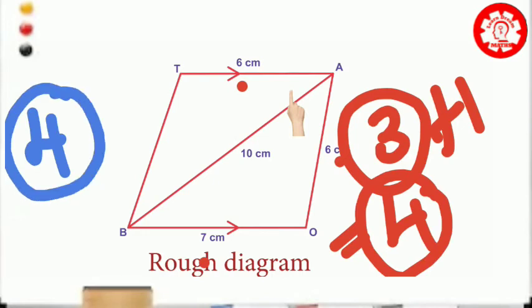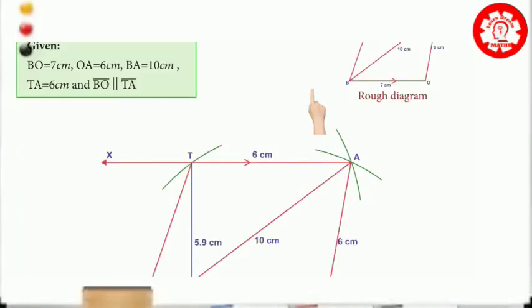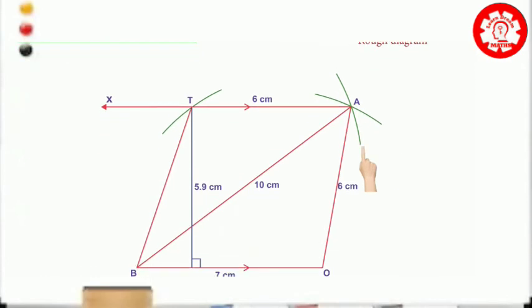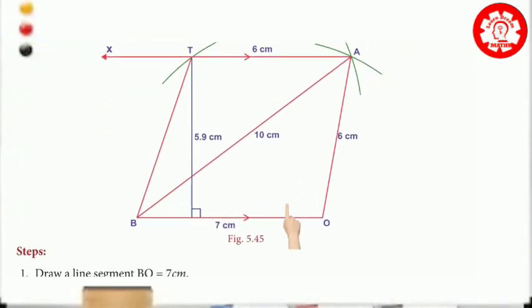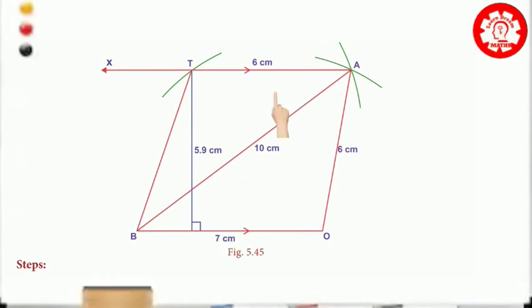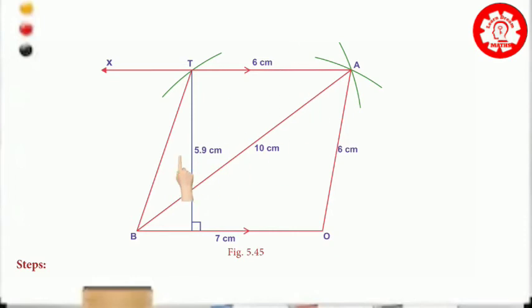So now we have the main figure. Based on the rough diagram, we have 99% of the figure complete. One of the pair of sides is parallel — that is the condition. To draw parallel lines, please consider the link in the description. We will use the same method — if you want to draw the parallel line, follow the diagram to complete the construction.